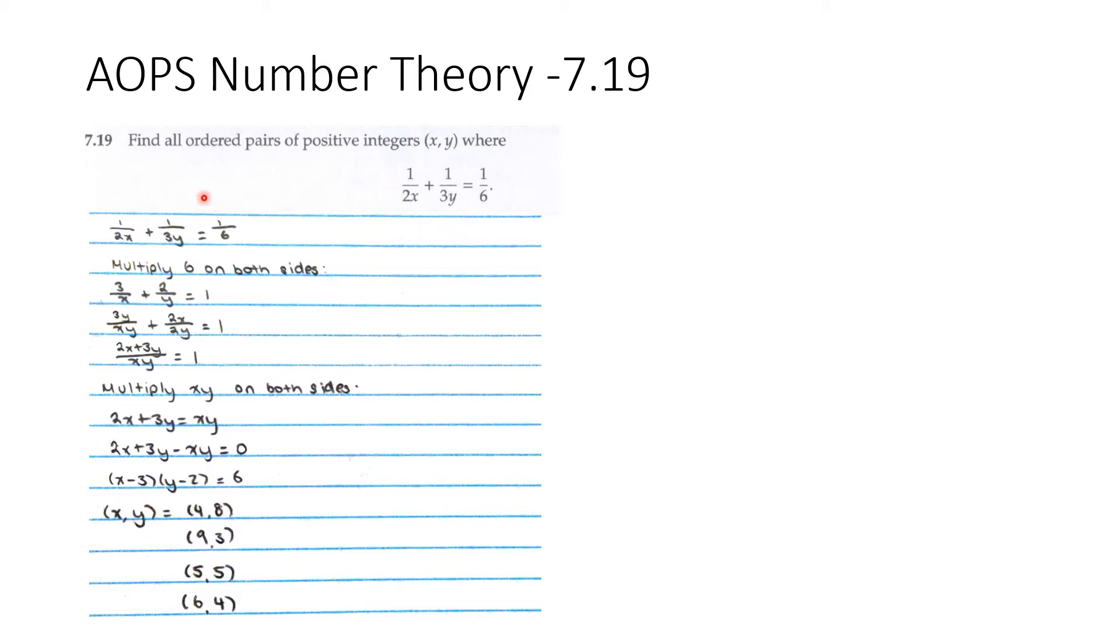So if we multiply 6 on both sides, we get 3/x + 2/y = 1. Then we change the two denominators into xy.